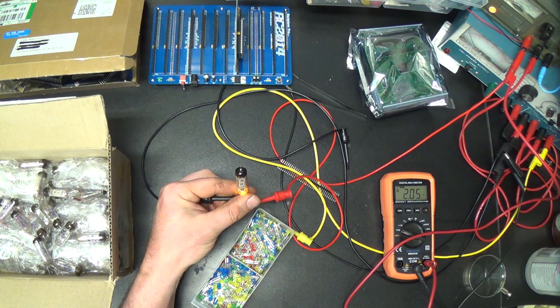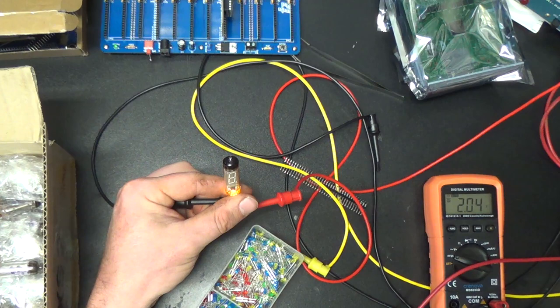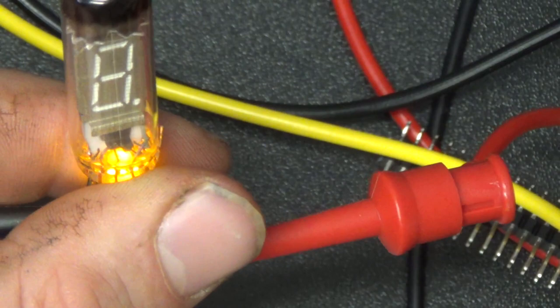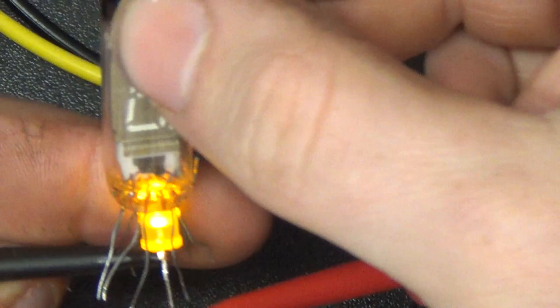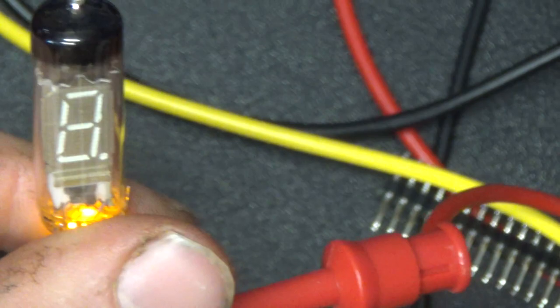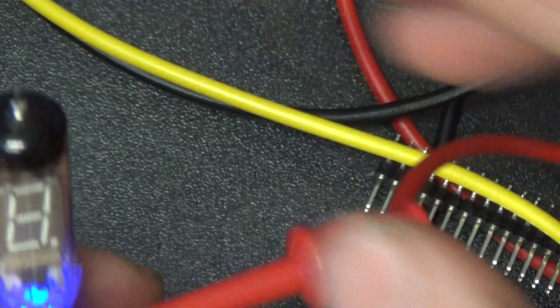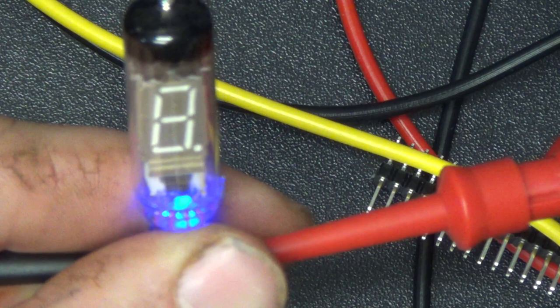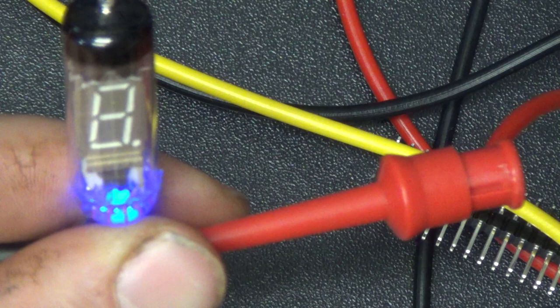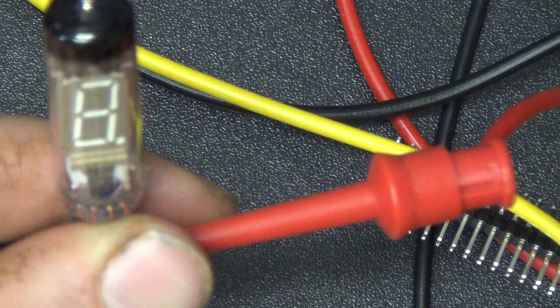Unfortunately, the heaters in these VFDs don't glow. But if I apply about two volts to a yellow LED in the bottom of it, that makes a nice little glow. I wonder how a blue one would look—might look like those old neon rectifier tubes that had blue in the bottom. That might look better with the blue digits on the tube anyway.